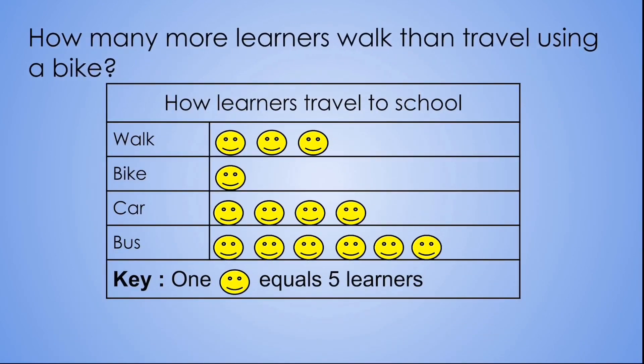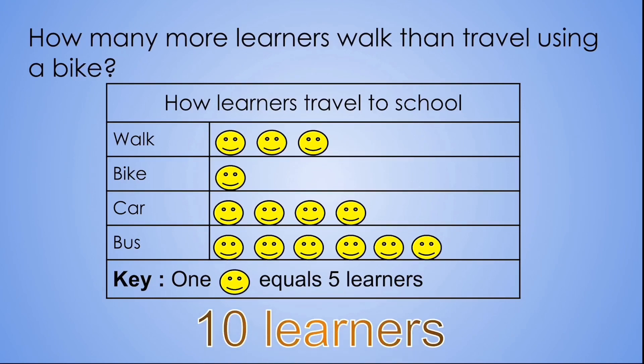Our next question is how many more learners walk than travel using a bike? So we're going to look at two rows — the walking row and the bike row — and we need to figure out how many more smiley faces are in the walking row than in the bike row. There are two smiley faces. But remember one smiley face equals five learners. Let's count together: five, ten. Therefore there are ten more learners that walk than travel using a bike.